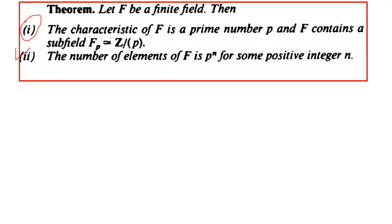We have to prove that given a finite field F, the characteristic of F is a prime number, say p. We also have to prove that F contains a subfield with the same characteristic, and this prime subfield fp is isomorphic to Z/pZ.